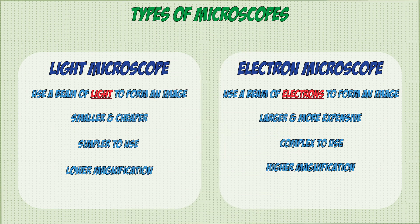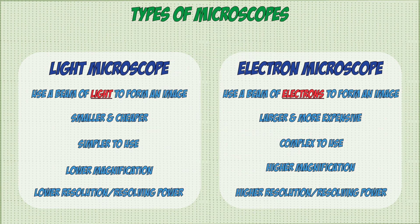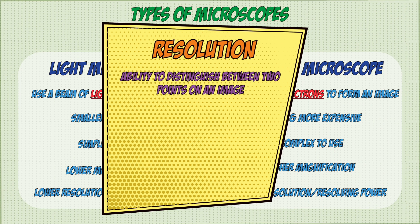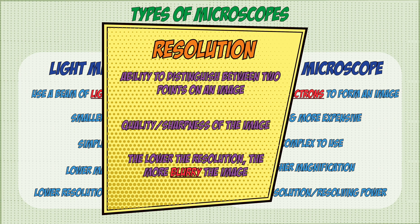The other improvement that an electron microscope has is a larger resolution, or resolving power. This is defined as the ability to distinguish between two points on the image, which you can think of as the quality or sharpness of the image. So the image formed from a light microscope will appear more blurry than that of an electron microscope.